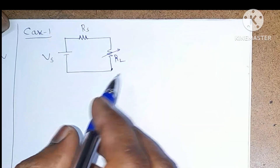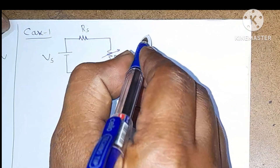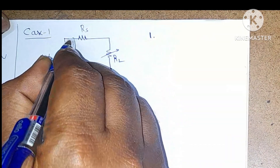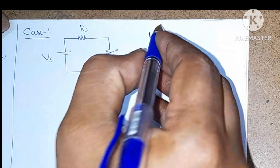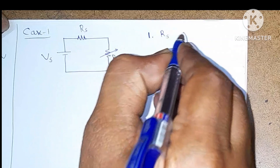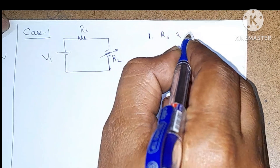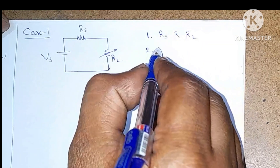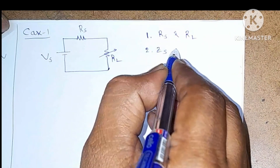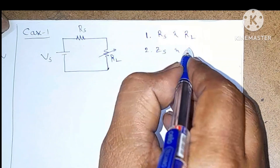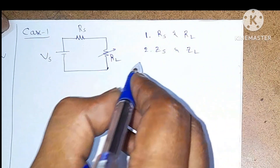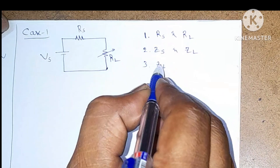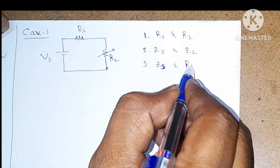In this, we have three conditions. First: source impedance is purely resistive and load impedance is purely resistive. Second case: source impedance is complex impedance and load impedance is complex impedance. Third case: source impedance is complex impedance and load impedance is pure resistance.